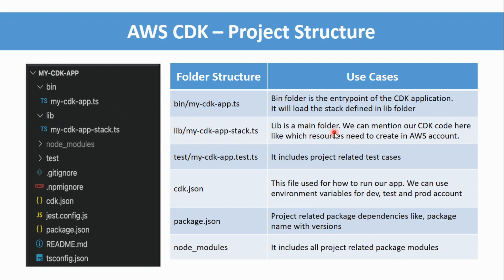The lib folder is the main configuration folder where you define all resources you want to deploy. The test folder is where you write project-related test cases. The cdk.json file is where you can define environment variables — for example, if you have multiple AWS accounts like dev and production.